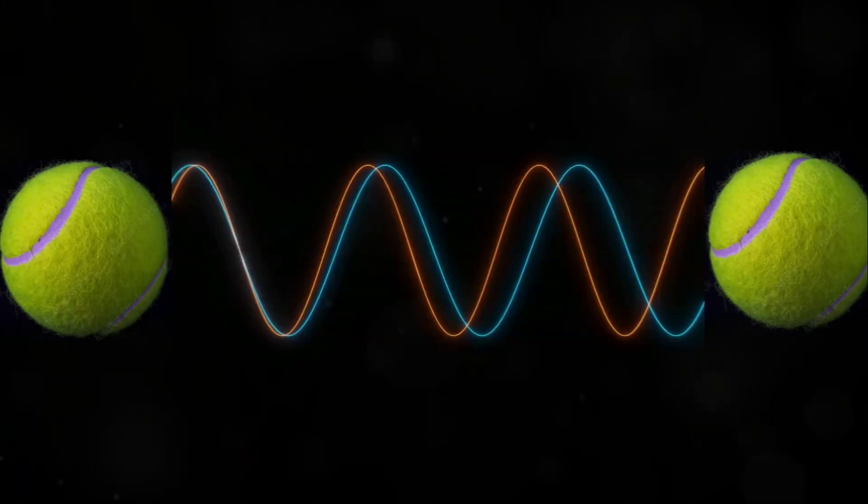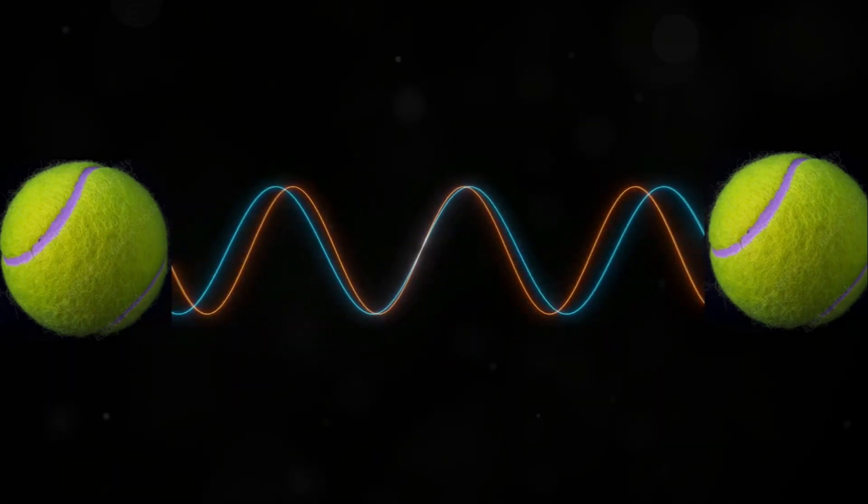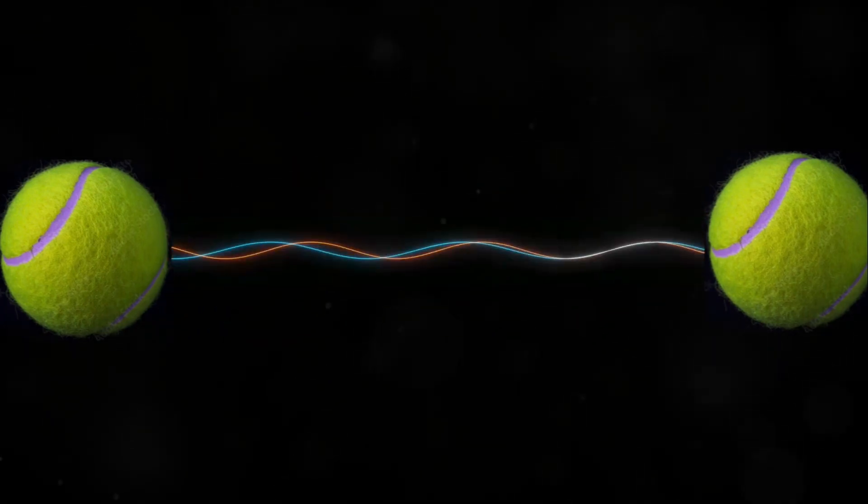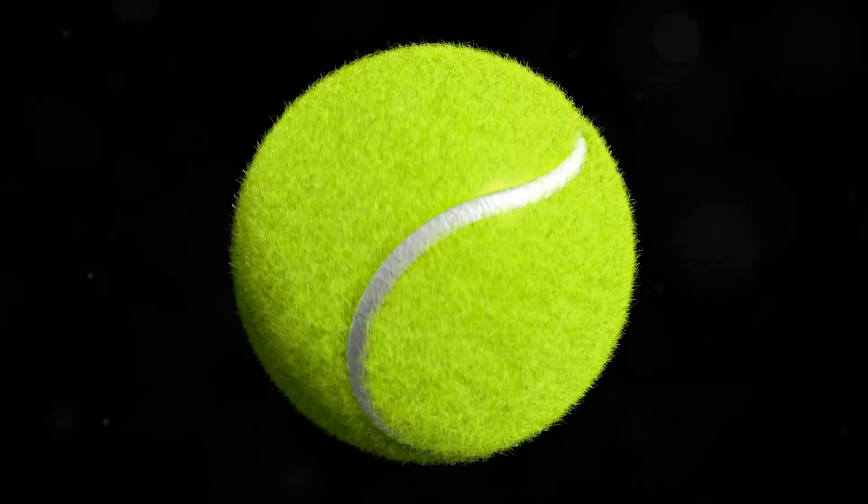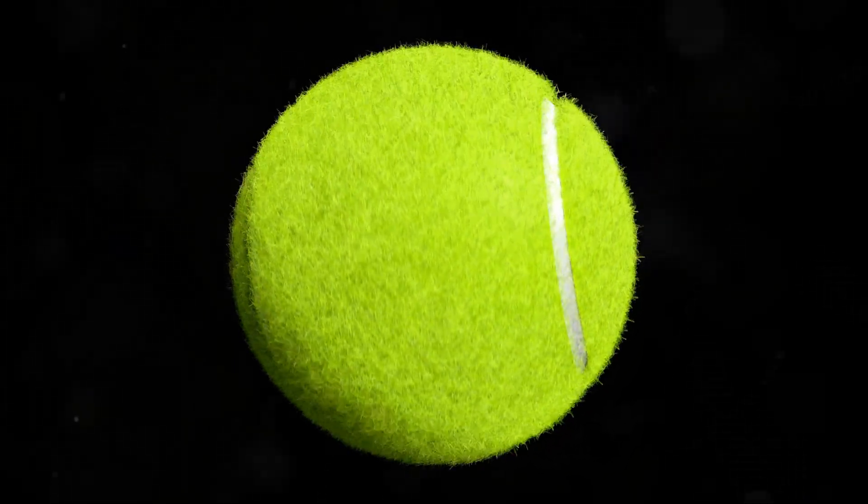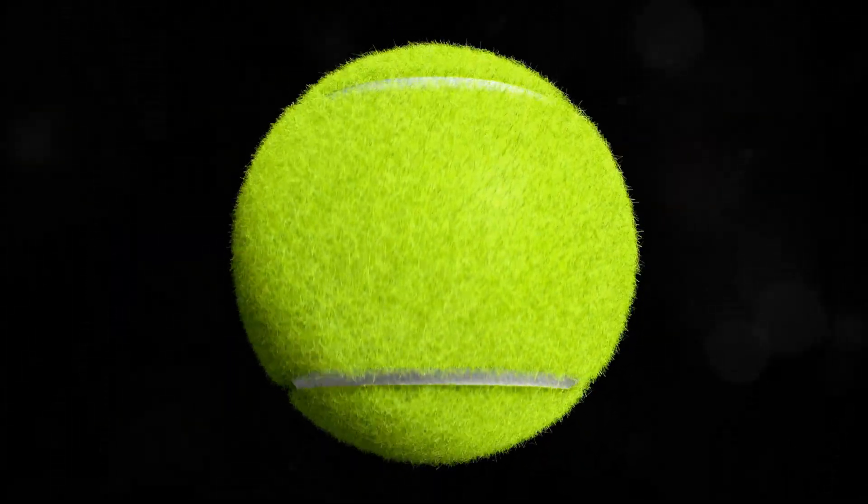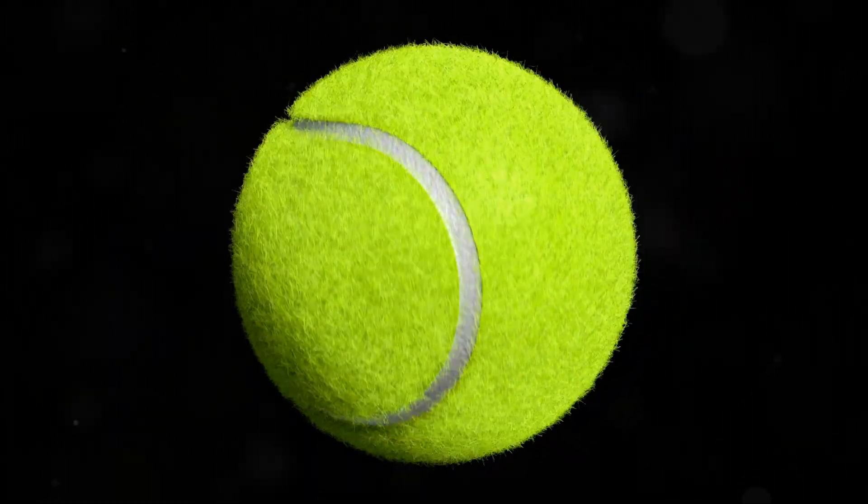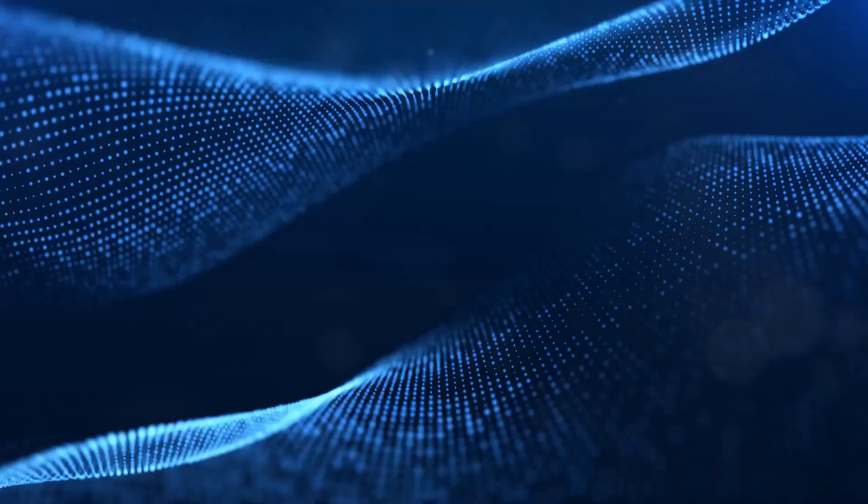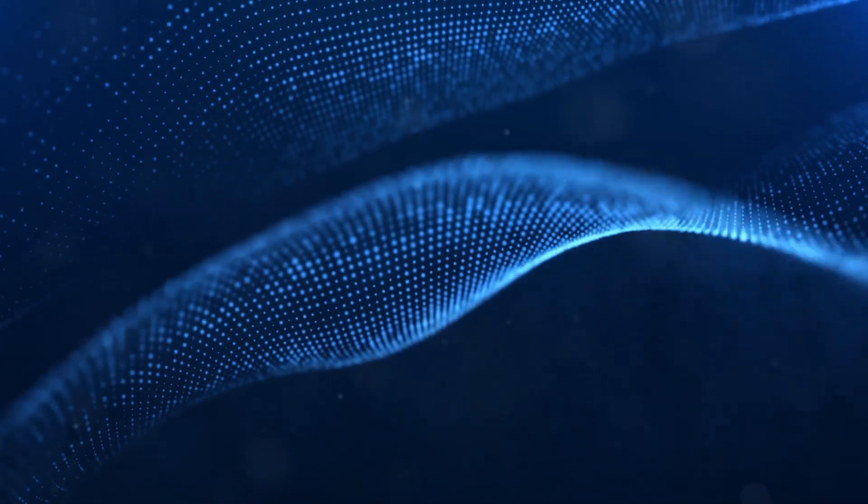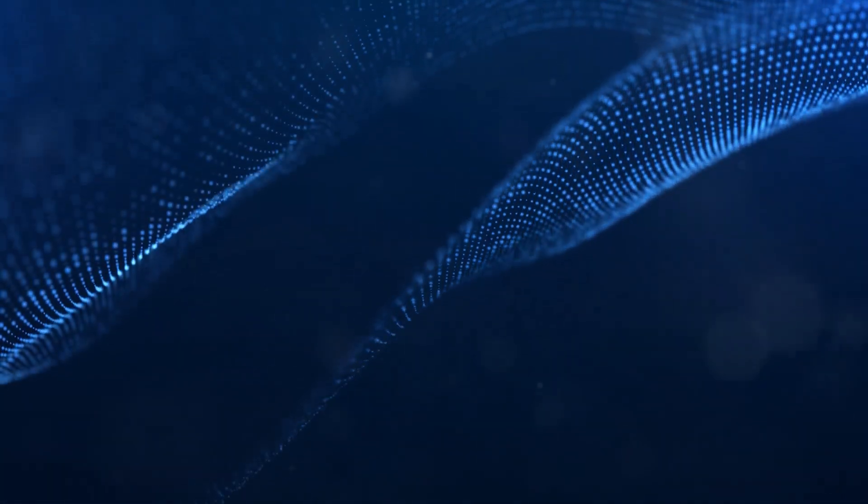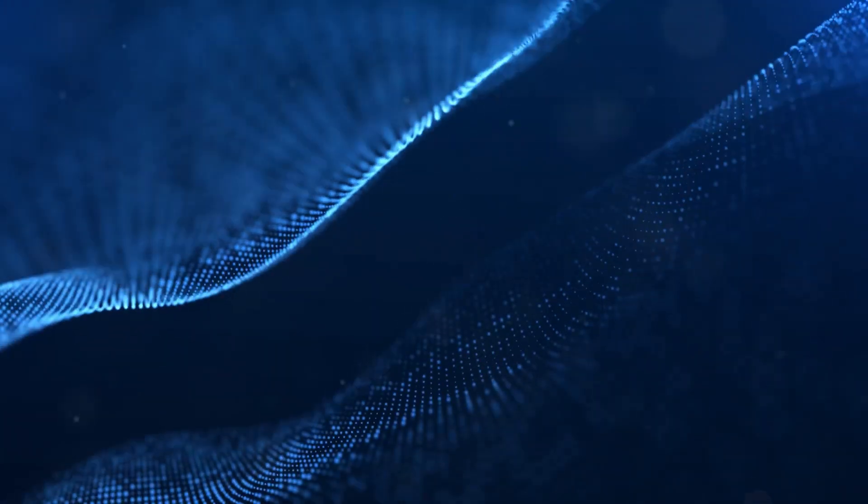This interference causes the different quantum states to cancel out in a process called decoherence. The result of decoherence is that the system as a whole behaves like a classical object, just like the tennis ball behaving as a solid macroscopic particle rather than a quantum wave. The collective interference of all the quantum states effectively washes out any noticeable wave-like behavior.